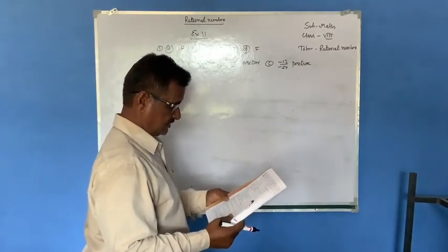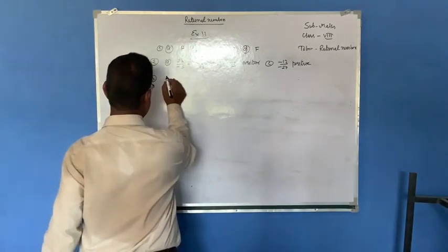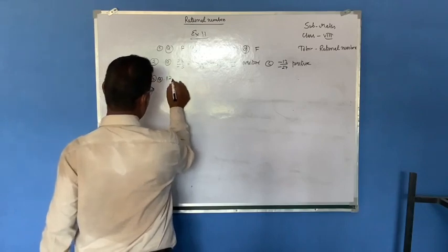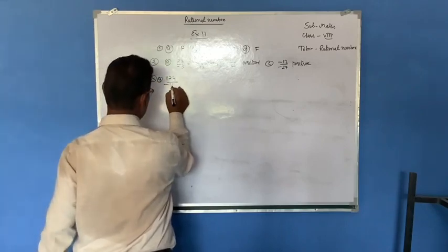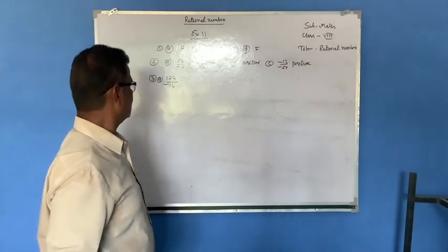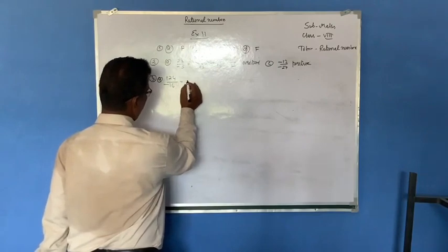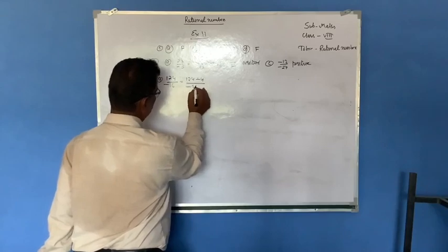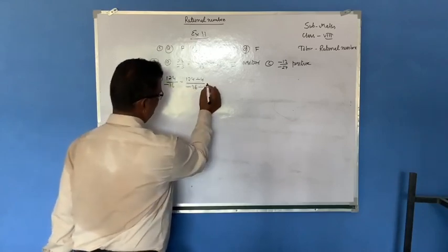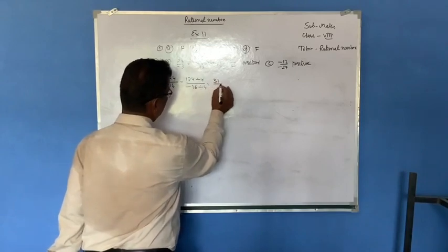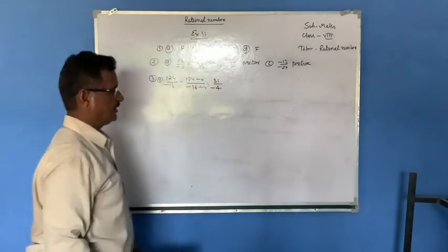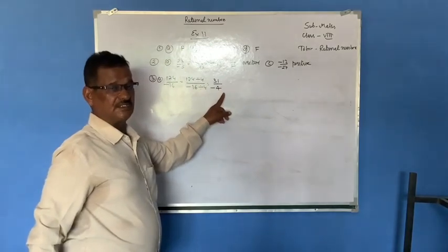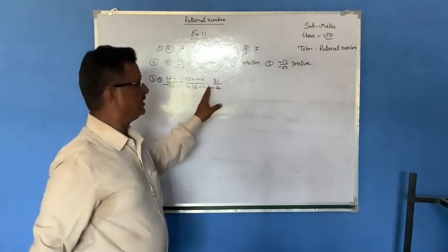Question number three, given: 124 by 16. To get the reduced form, divide by 4. So 124 divided by 4 gives 31, and minus 16 divided by 4 gives minus 4. There are no common factors between 31 and 4, so this is the lowest form of the given number 124 by minus 16, which is 31 by minus 4.